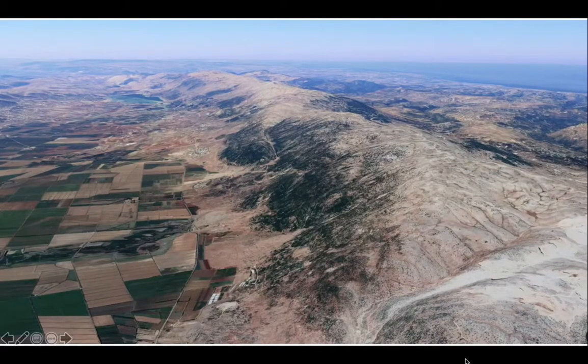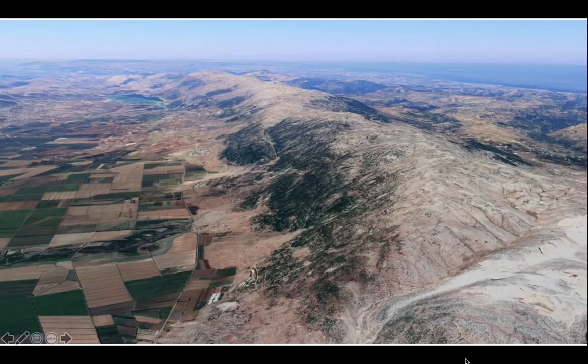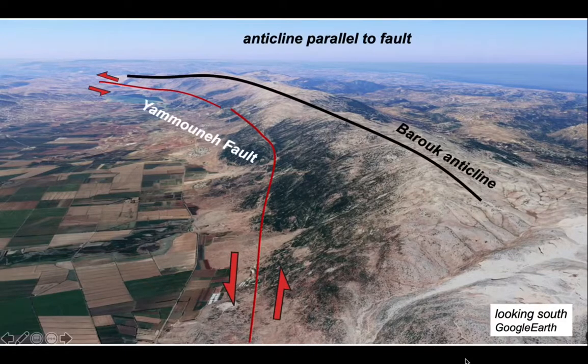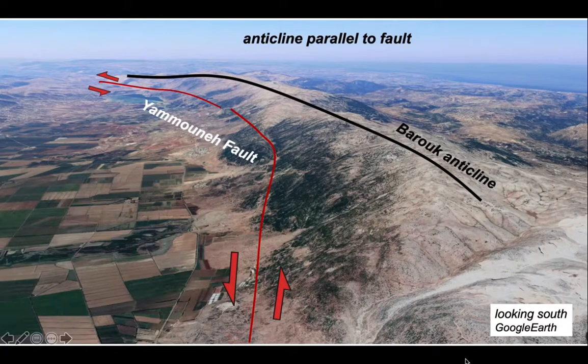Here we can see in a satellite image the landscape that we were just sat in. The fields on the left are in the Beqaa Valley and the ridge is the antiform. We're looking south along the Yammouneh Fault, this major strike-slip fault zone that's left lateral. The antiform is called the Barouk Anticline and you can see that it's parallel to the fault.